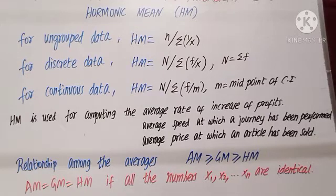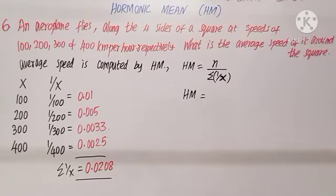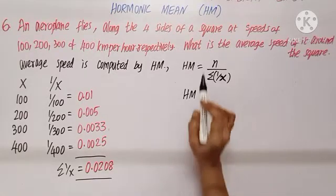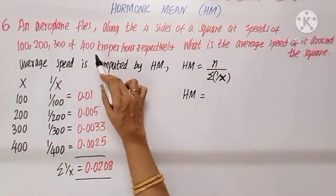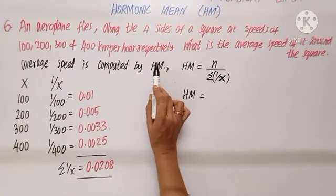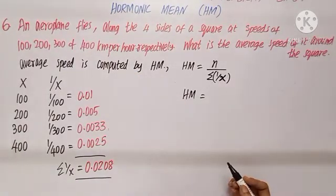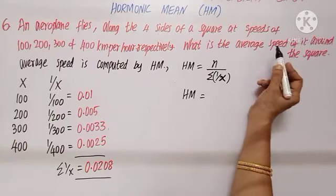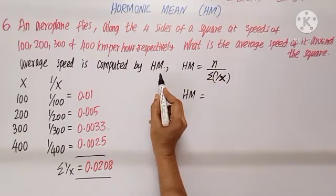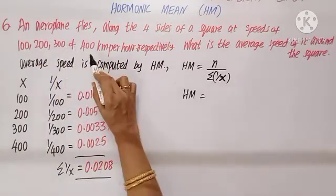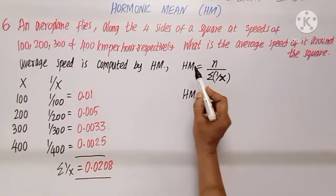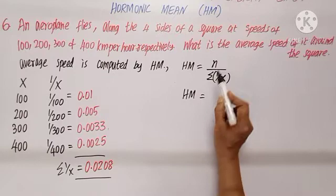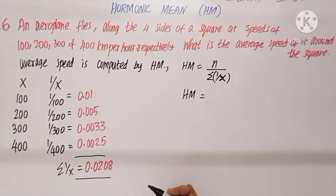Exercise 8.1, question number 6: An aeroplane flies along the four sides of a square at speeds of 100, 200, 300, and 400 km per hour respectively. What is the average speed of the aeroplane around the square? We know average speed is computed using harmonic mean. Given four data values, it is ungrouped data.